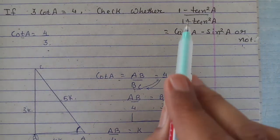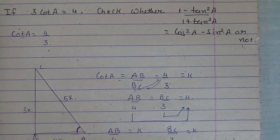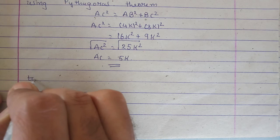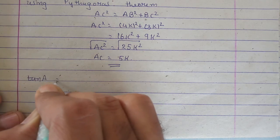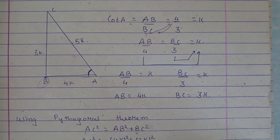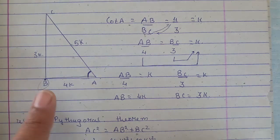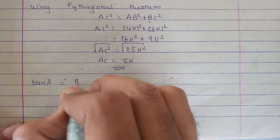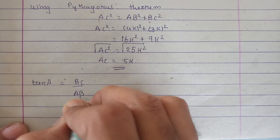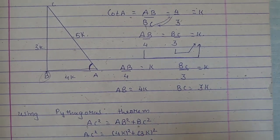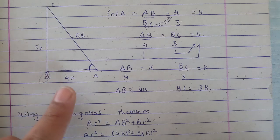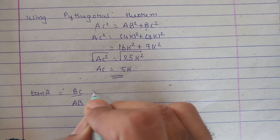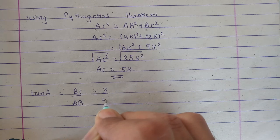Now we need tan, sine, and cos. So we will write the formula here. TanA - tan means opposite upon adjacent, so BC upon AB. That will be BC upon AB. Now BC is 3K, AB is 4K. K and K cancel, so this will be 3 upon 4. So BC upon AB will be 3 upon 4.